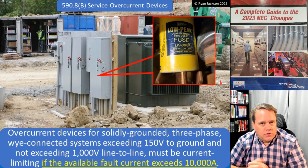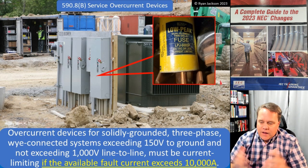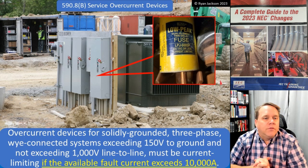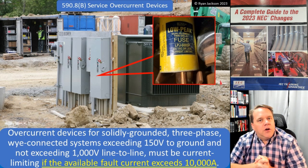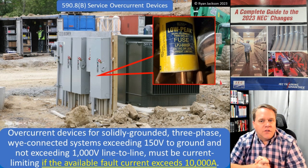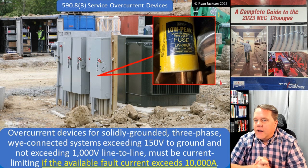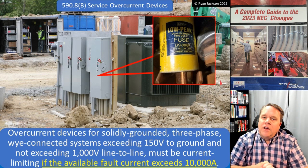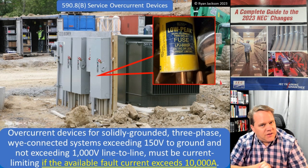There you have Article 590, and that's it for Chapter 5. Hopefully we'll see you on the next video when we start getting into Chapter 6. We're going to start with Article 625, Electric Vehicle Power Transfer System. I hope to see you there, and I hope you have a great day.